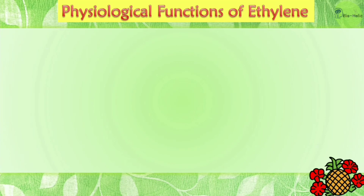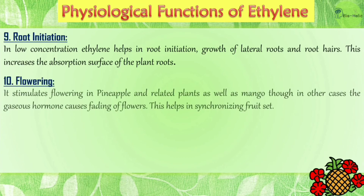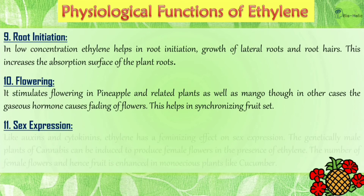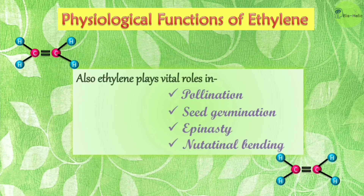Ethylene is essential for root initiation. In low concentrations, it helps in root initiation, growth of lateral roots, and root hairs, increasing the absorption surface of plant roots. Ethylene stimulates flowering in pineapple and related plants, as well as mango, though in other cases the gaseous hormone causes fading of flowers, helping to synchronize fruit set. Like auxins and cytokinins, ethylene has a feminizing effect on sex expression. Genetically male cannabis plants can be induced to produce female flowers in the presence of ethylene, and the number of female flowers and fruits is enhanced in monoecious plants like cucumber. Ethylene also plays vital roles in pollination, seed germination, and nutritional bending.